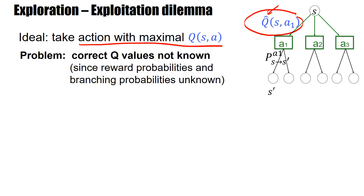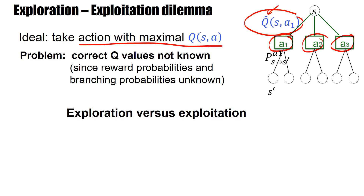And so we have the following dilemma. In order to find out a good estimate of the Q values, we should play the same action often, and we should do this for each of the actions. But that costs time and money, because only if you play the good action can you get the optimal reward. And that means we have a dilemma between exploration — playing every action lots of times to find out whether it's good or not — and exploitation, which means playing the best action so that you get the maximal reward. This is known as the exploration-exploitation dilemma.